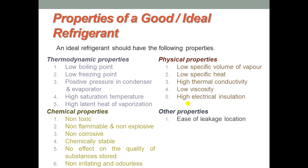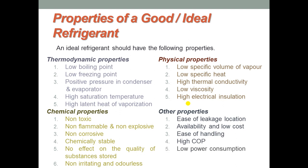Some other properties include ease of leakage location — in case of any leakages, there should be ease in identifying the leakage of a refrigerant. Then availability and low cost — it should be easily available and the cost should be low. Ease of handling, high coefficient of performance, and low power consumption. So the consumption of power by the refrigeration cycle should be low.